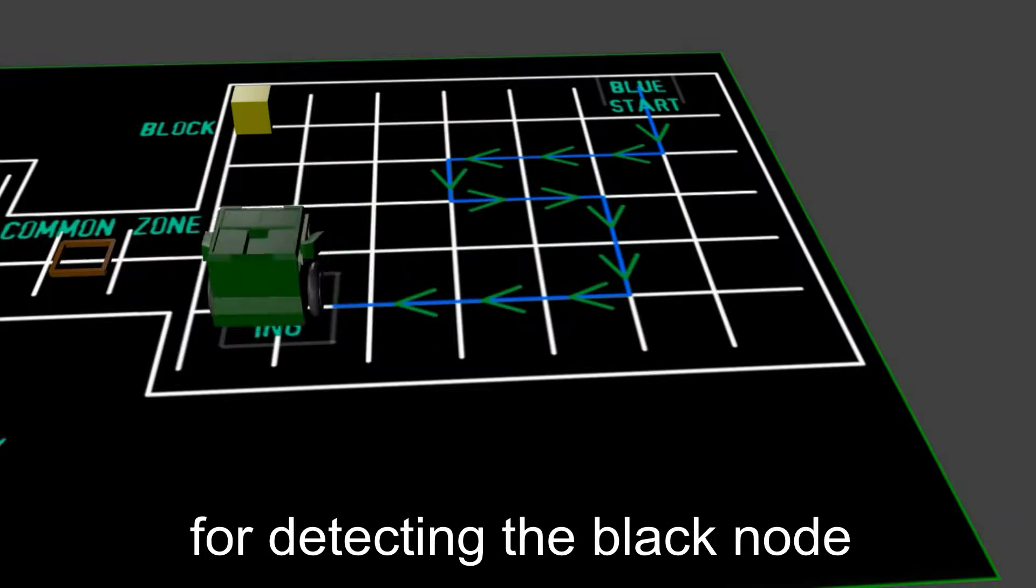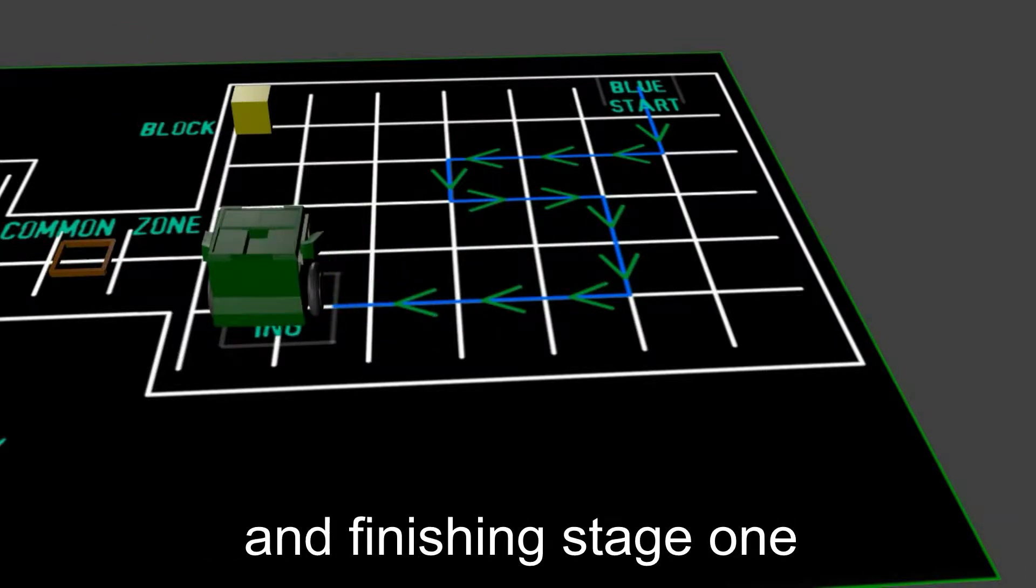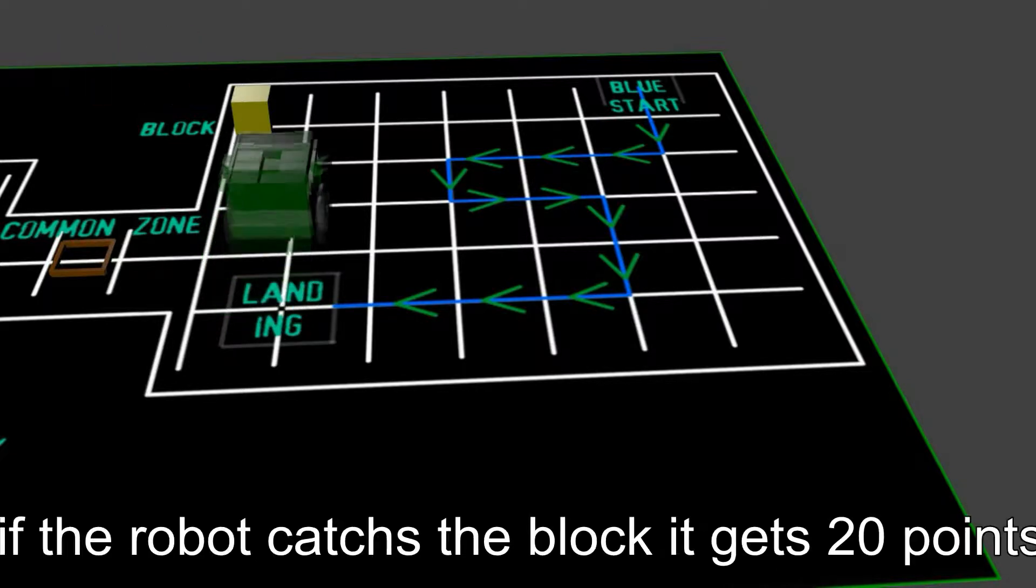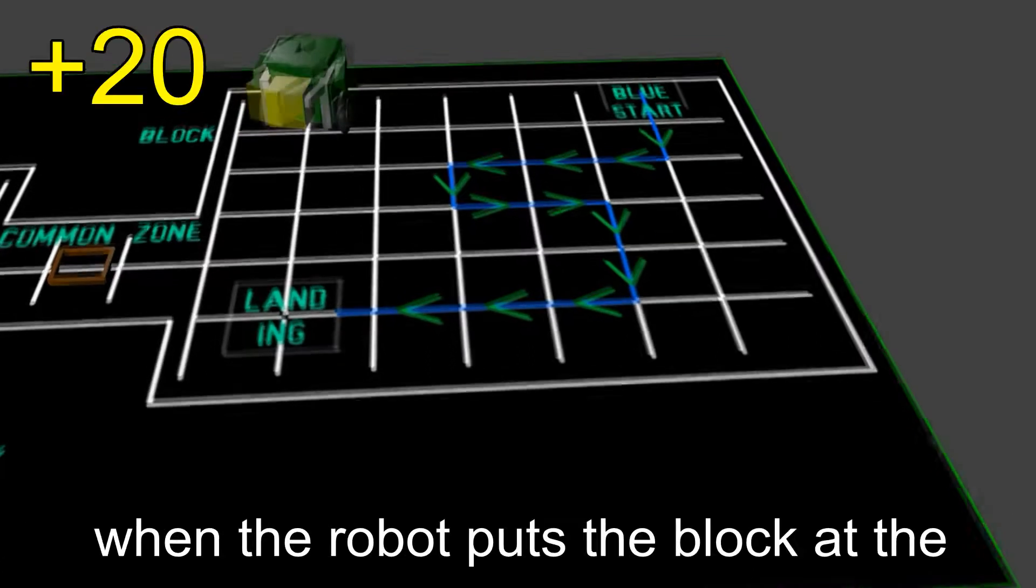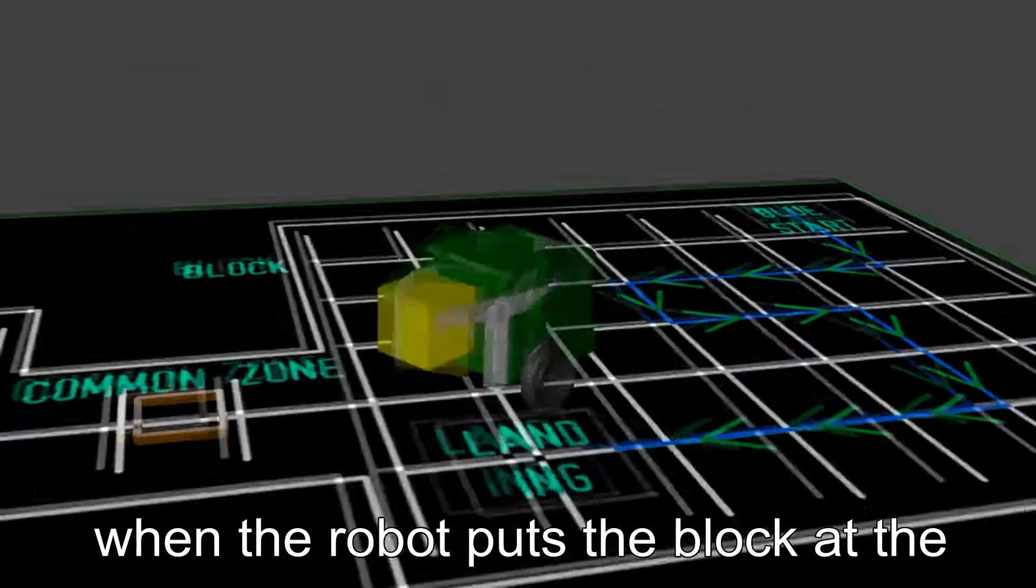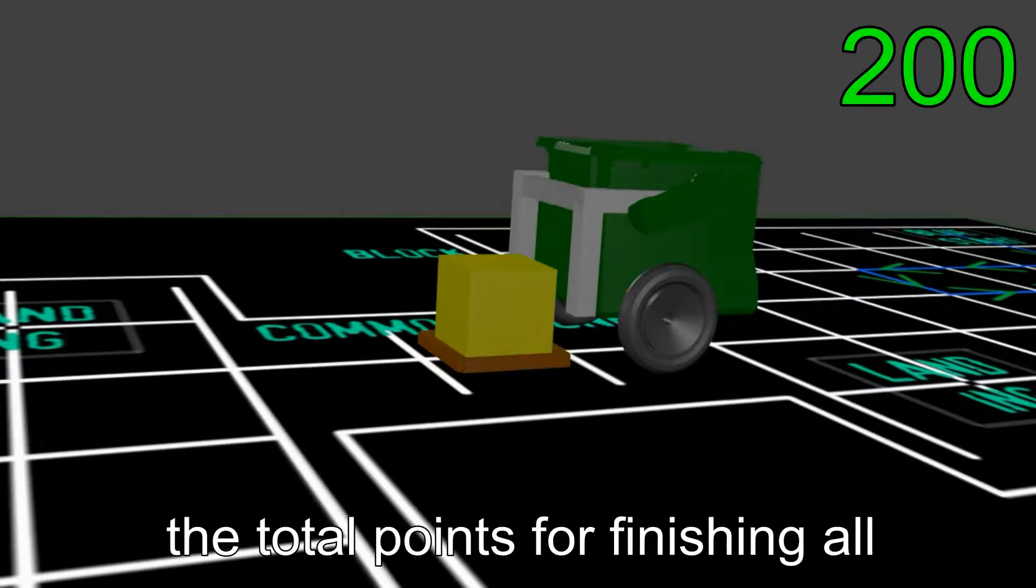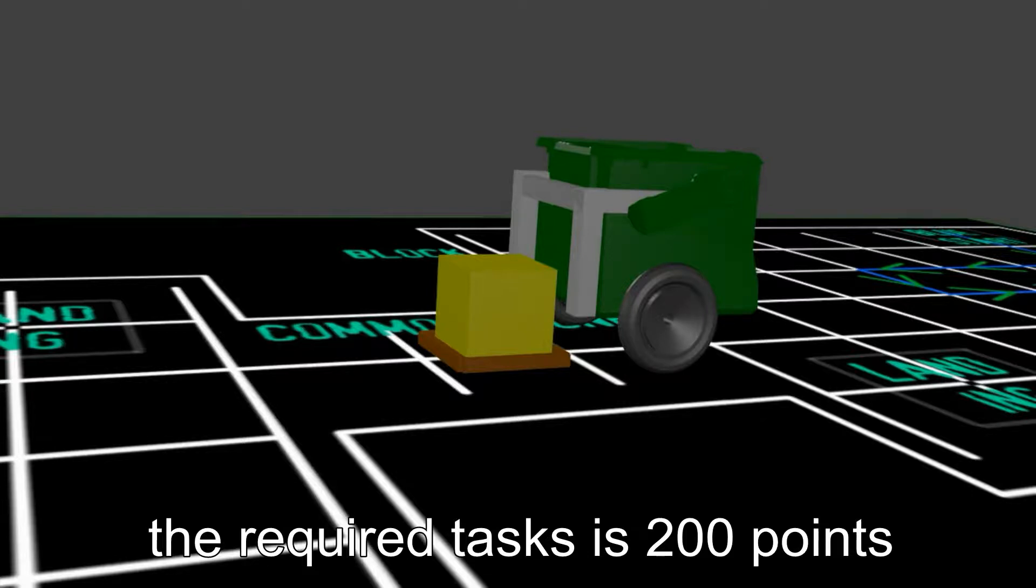For detecting the black node and finishing stage 1 with audio signal, it gets 20 points. If the robot catches the block, it gets 20 points. When the robot puts the block at the common area on the frame, it gets 40 points. The total points for finishing all the required tasks is 200 points.